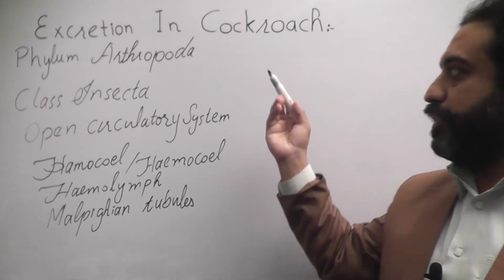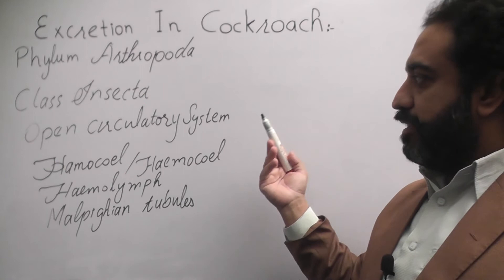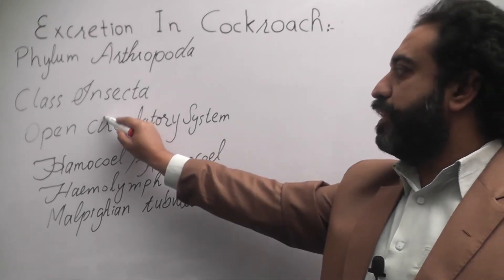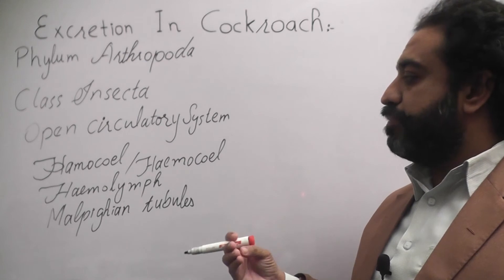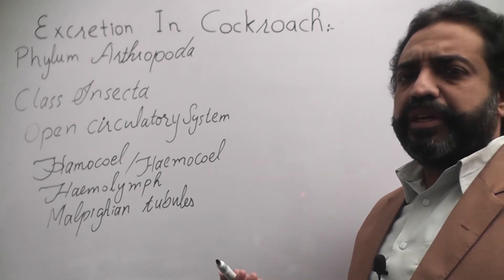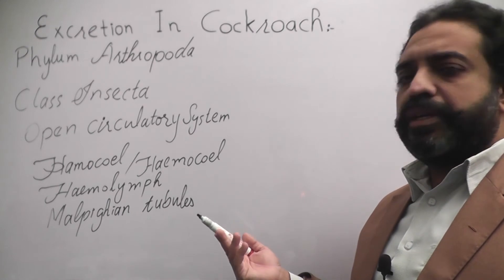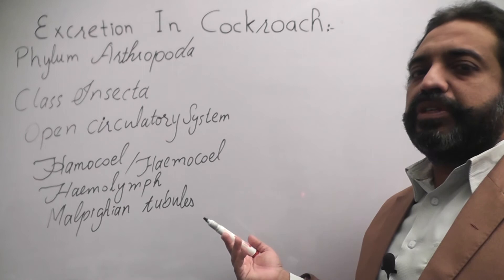This cockroach is related to Phylum Arthropoda, class Insecta. They have open circulatory system. Hemoseals are the cavities and hemolymph is the medium. Hemolymph is whitish in color because it is open circulatory system, so RBCs don't transport oxygen.